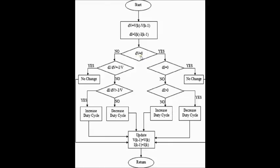Similarly, if the change in voltage is not zero — meaning the voltage is actually changing — it will check DI/DV whether it is a negative value. If you are getting a negative value, there won't be any change, meaning the maximum power point is reached. If it is not satisfying that condition, it will check whether DI/DV — the change in current with respect to the instantaneous change in voltage — is greater than the mean value of current by voltage, which is the conductance. If it satisfies the condition, the duty cycle is increased; otherwise the duty cycle is decreased.